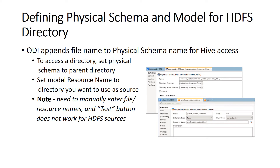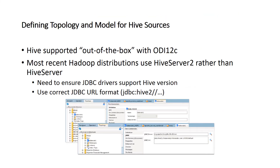Next, go to the Definition tab and set the schema and working schema to the actual path where the file resides. Set the physical schema to the parent directory, then provide the resource name — the file name you want to reverse-engineer into the model, as shown on screen. Note that because we are working with files, you cannot use the Test button to test the connection.